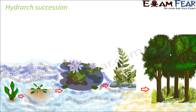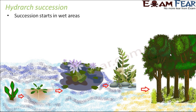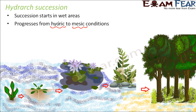Now we will talk about the next type of succession in plants: hydrarch succession. Hydrarch is derived from water. This type of succession starts in wet areas — maybe a pond, a swamp, or a lake — which have too much abundance of water. And what happens? It progresses from hydric to mesic conditions. So here we will see how it gets transformed from hydric to mesic over a period of time.